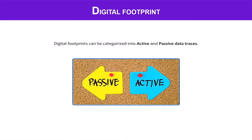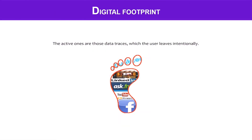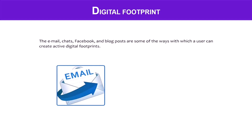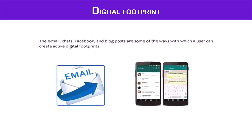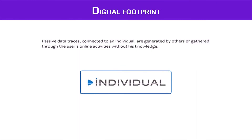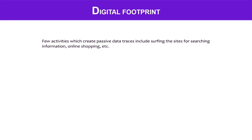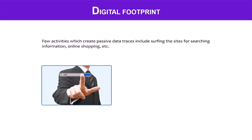Digital footprints can be categorized into active and passive data traces. Active data traces are those which the user leaves intentionally — emails, chats, Facebook and blog posts are some ways a user can create active digital footprints. Passive data traces are generated by others or gathered through the user's online activities without their knowledge. Activities which create passive data traces include surfing sites for information, online shopping, etc.